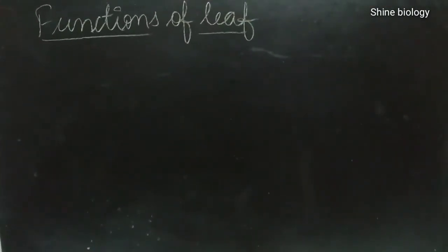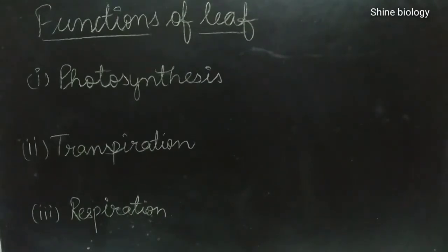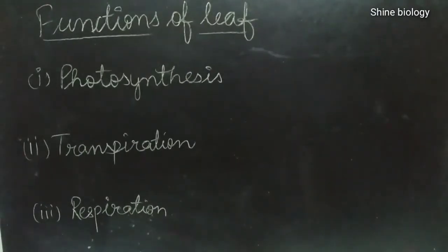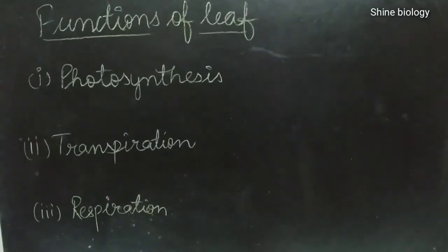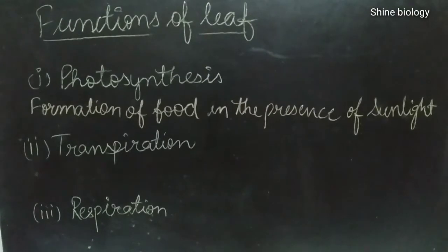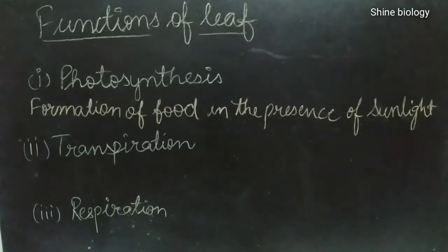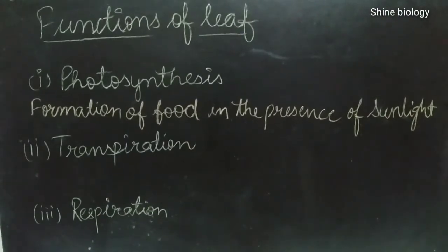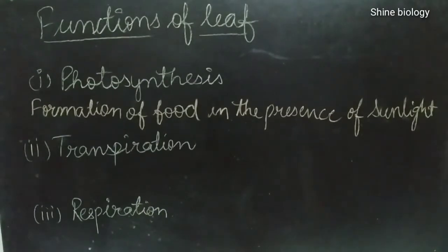Next are the functions of leaves. There are three main functions of leaves: the first is photosynthesis, the second is transpiration, and the third is respiration. Photosynthesis is the process of formation of food in the presence of sunlight, using raw materials like carbon dioxide and water.